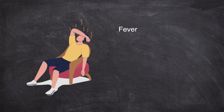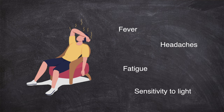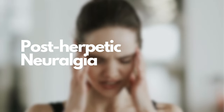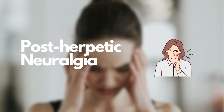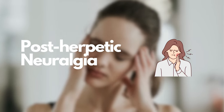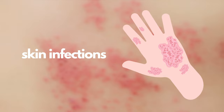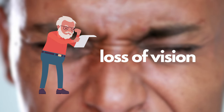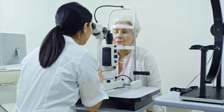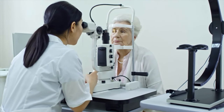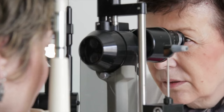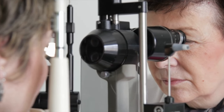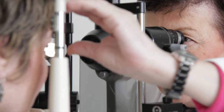Other symptoms may include fever, headaches, fatigue, and sensitivity to light. While most cases of herpes zoster resolve without complications, there are potential risks. One of the most significant complications is post-herpetic neuralgia, which is a persistent pain in the area affected by the shingles rash. Other complications may include bacterial skin infections and loss of vision. If you suspect you have herpes zoster, it's crucial to seek medical attention promptly.